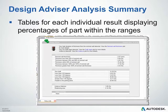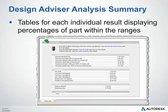In addition to the three results that you get after running your design advisor analysis, you'll also have an Analysis Summary tab at the bottom. This tab will contain tables for each individual result and display the percentages of the part that are within the ranges. This might be a good starting point to see which individual results you may need to interrogate further.